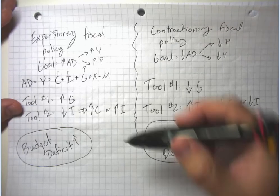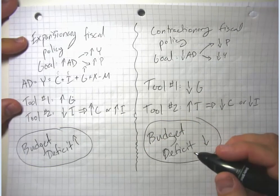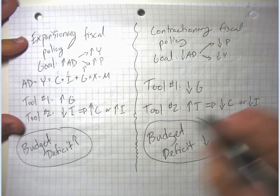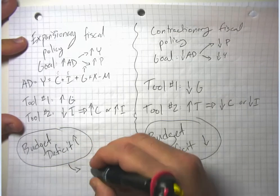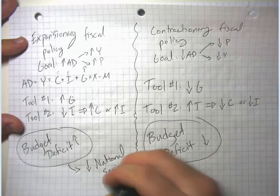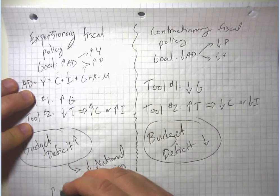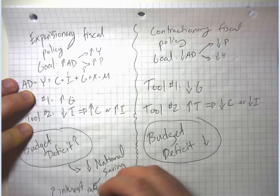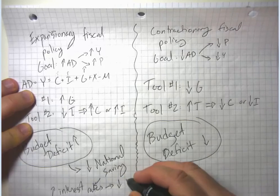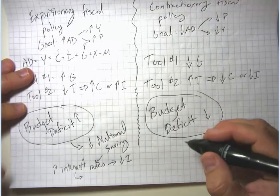Budget deficits may look appealing, but we have to think about something like the loanable funds model. A change in the government's budget deficit impacts the level of national saving. To say the budget deficit goes up is equivalent to saying national saving is going down. And if national saving is going down, that's going to cause long-run real interest rates to go up. And if real interest rates are going up, that's going to tend to depress investment spending.